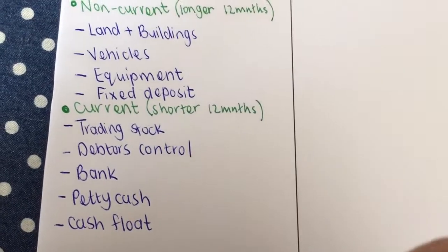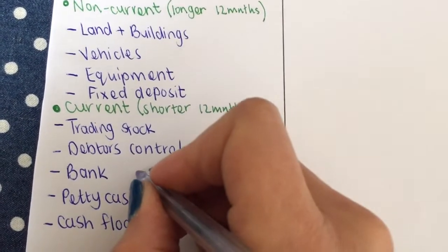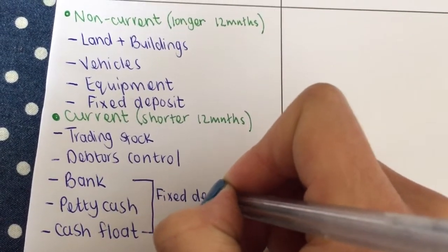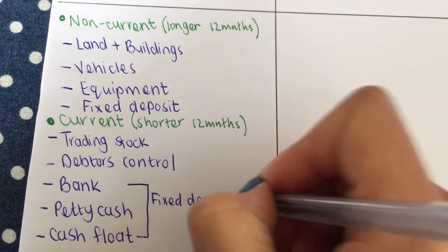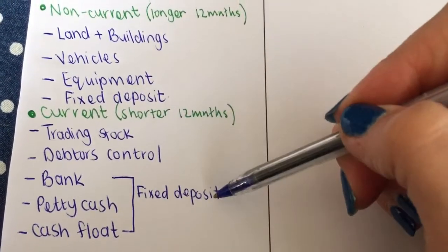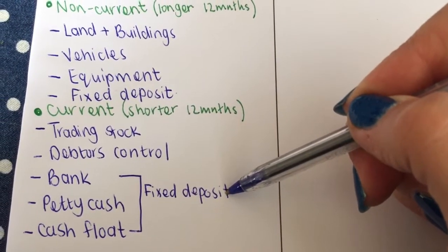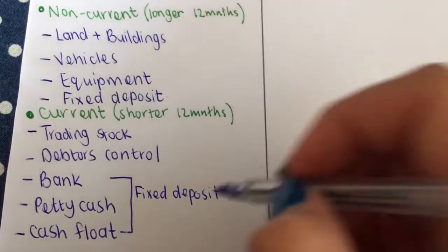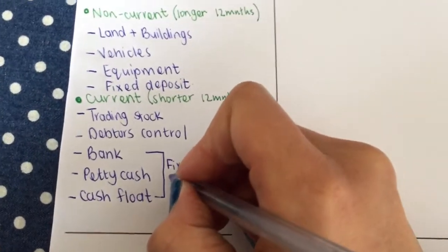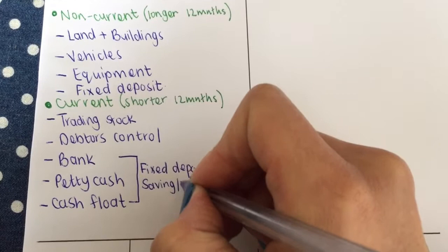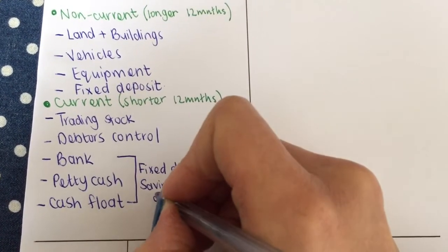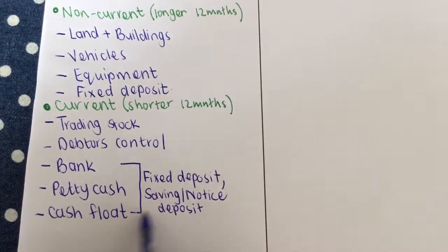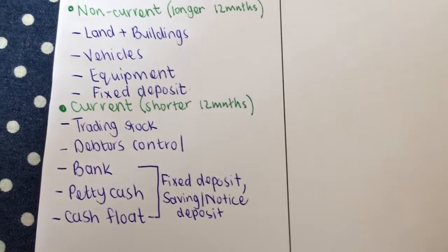You might also get a couple of others linked to these. If my fixed deposit will mature—that means some of it, part of it will be paid back—then the little bit that's paid back will now be classified as a short-term asset with my bank, my cash float, and my petty cash. In some textbooks, you get something like a savings account or a notice deposit, and that's also entered here with all my money items under current assets.